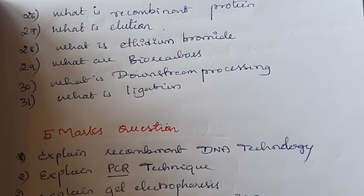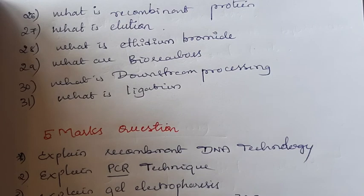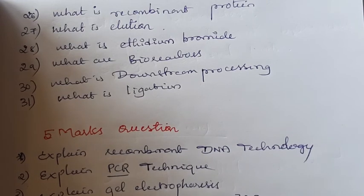Next: what is elution? Just after gel electrophoresis separation, the gene of interest has to be isolated. That gene of interest is mixed with chilled ethanol or other solvents. Washing of the DNA with solvents in order to get the pure DNA is known as elution.